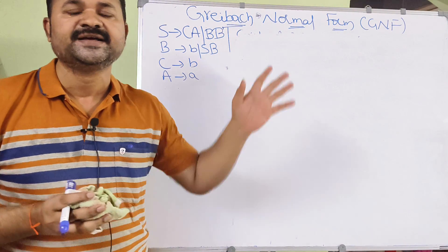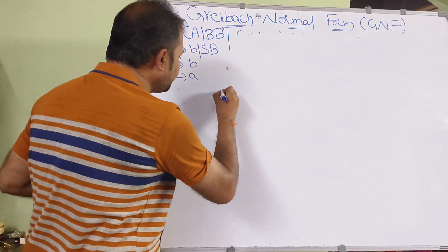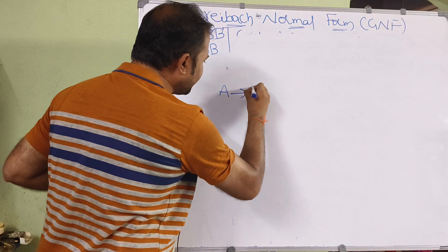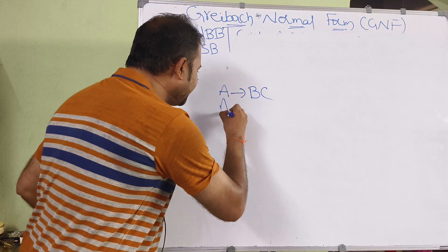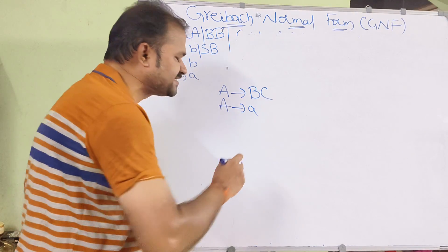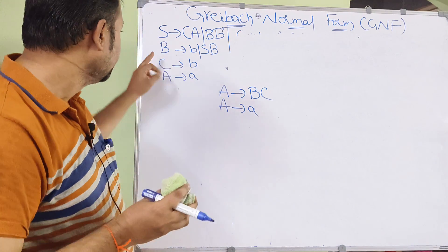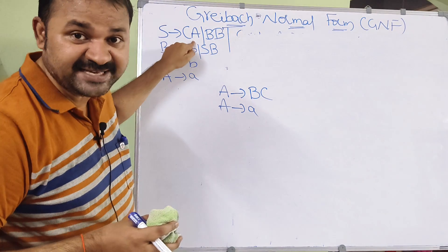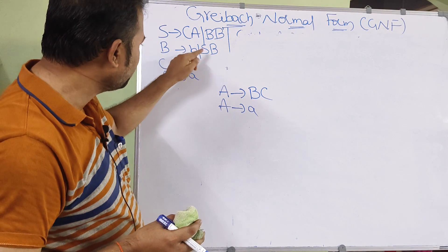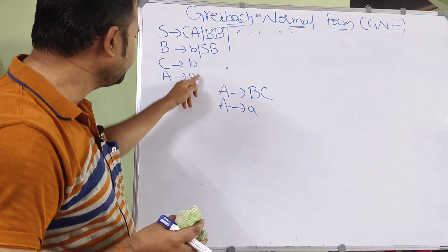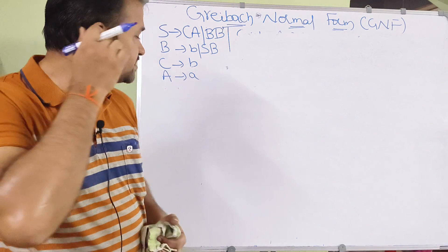The second step: check whether it is in Chomsky Normal Form. In CNF, each non-terminal must produce exactly two non-terminals or exactly one terminal. Observing the grammar: S produces exactly two non-terminals, S produces exactly two non-terminals, B produces exactly one terminal, two non-terminals, one terminal. All productions are valid CNF, so we can start the GNF conversion process.